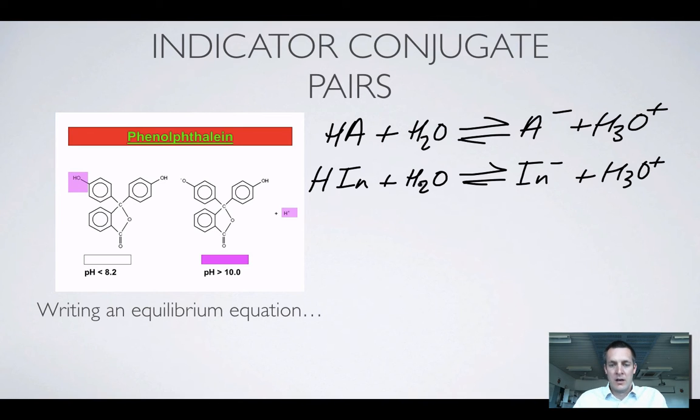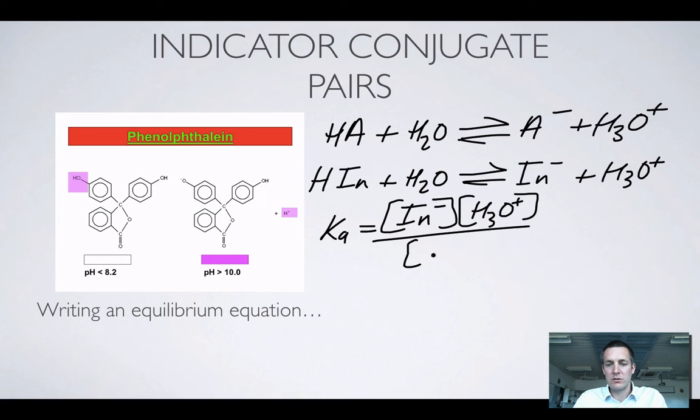We can see here that there's an equilibrium between the undissociated form of the indicator and the dissociated form, and what is more we can write an equilibrium constant for that. So Ka is now equal to [In-] multiplied by [H3O+] and divided by the concentration of the undissociated form [HIn]. There's really no difference between this and an acid dissociation constant except for the fact that we've called the anion of the acid In- to make it clear that we're talking about an indicator.